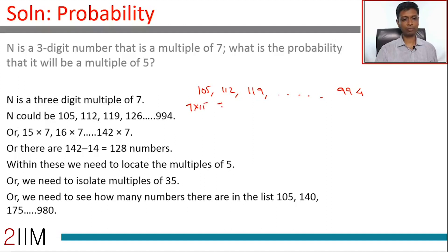So, this is 7 into 15, 7 into 16, 7 into 17, and so on. So, 994 by 7. We will divide 994 by 7. So, this is 7, 29, 4, 28, 142. So, 7 into 15, 7 into 16, all the way to 7 into 142. Out of the 142 multiples of 7, we are leaving out the first 14. We are starting from 15, so there are 128 numbers in this list.